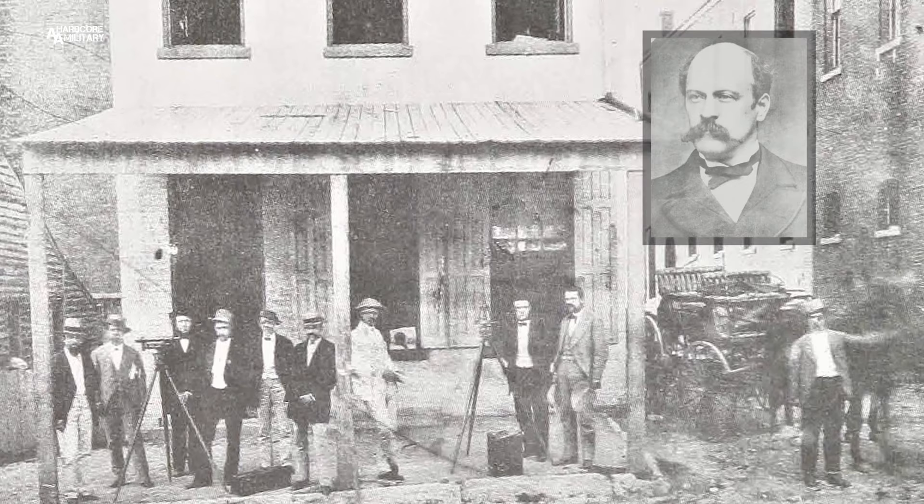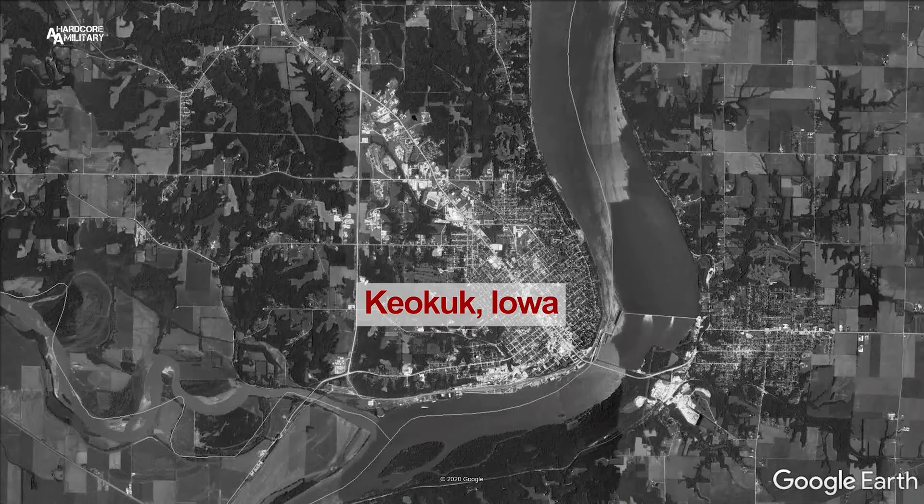On August 3, 1866, under the guidance of Lieutenant Colonel J.H. Wilson, the Rock Island District Office opened in Keokuk, Iowa to supervise construction of the Des Moines Rapids Canal, which eventually opened to traffic in 1877.